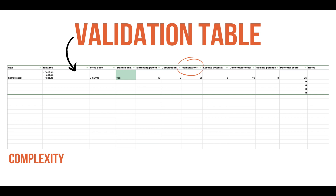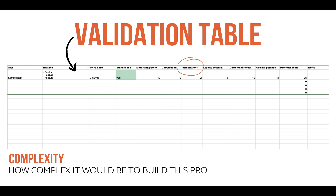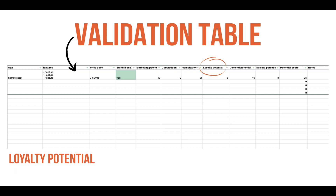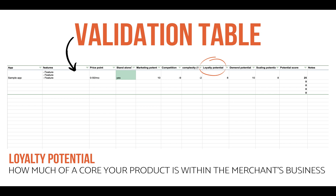The next column is complexity — how complex will it be to build this product? High complexity means more development cost, but low complexity means competitors can easily copy your product. For your first product, we suggest building something simple that's easy to implement so you can test the waters. The next point is loyalty potential — how core is your product within the merchant's business? Shopify itself is a 10, since merchants build their entire business around it. A simple banner widget scores low because merchants can easily switch. You want merchants to depend on your product so it's not easy for them to move to a competitor.